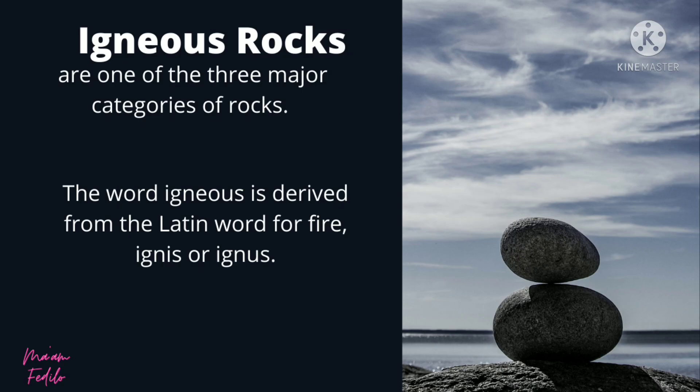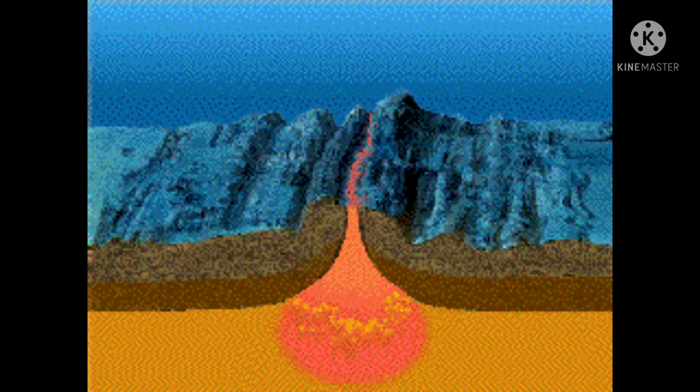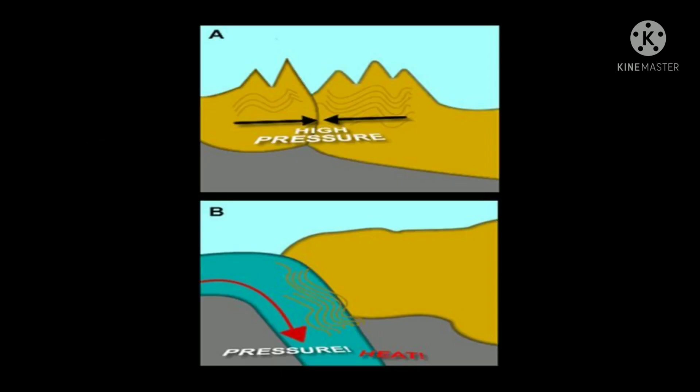The first question is: what are igneous rocks? Igneous rocks are one of the three major categories of rocks. The word igneous is derived from the Latin word ignis or ignos, which means fire. These rocks are commonly found on the surface and beneath the earth, and they are commonly found in divergent boundaries, convergent boundaries, subduction zones, and hotspots.